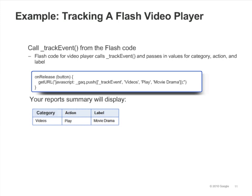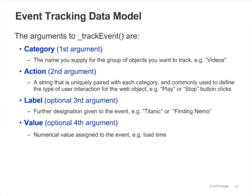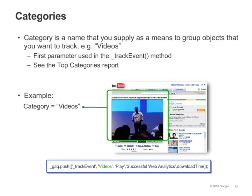Let's look at each of these arguments. The strings that you provide for the first three arguments — category, action, and label — govern how the events will be organized in your reports. So you'll want to think carefully about how you want to structure your events. Category is a name that you supply as a means to group objects, which are usually user interface elements that you want to track. So for example, if you have games and videos on your site, you'd probably want to have a games category and a videos category.